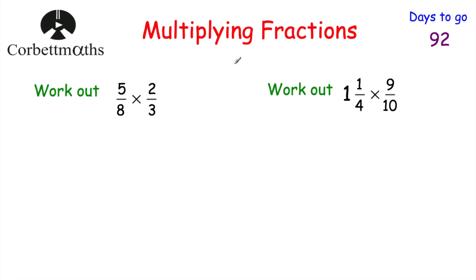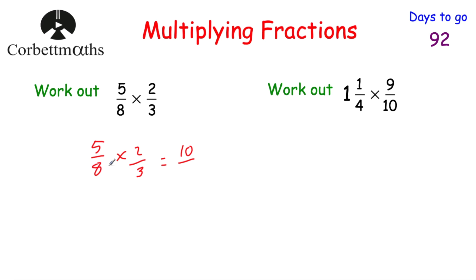Let's get started. Today we're going to be looking at how to multiply fractions and how to divide fractions. Multiplying fractions is actually quite nice — all we need to do is multiply the numerators and the denominators. So if we had 5 eighths multiplied by 2 thirds, we just multiply the numerators: 5 times 2 is equal to 10, and the denominators: 8 times 3 is equal to 24. So 5 eighths multiplied by 2 thirds would be 10 twenty-fourths.